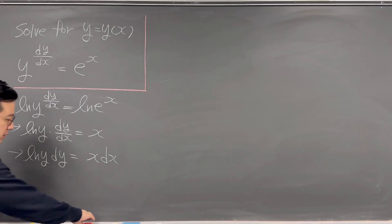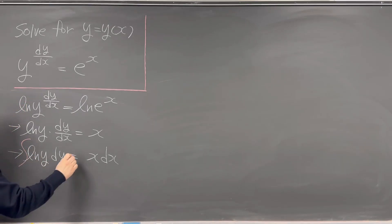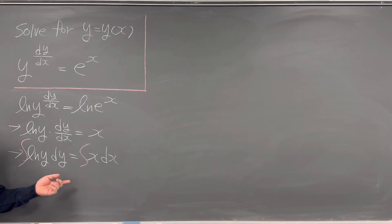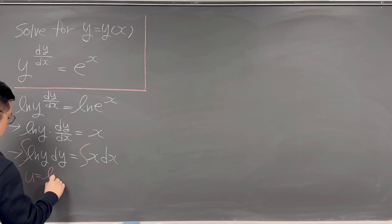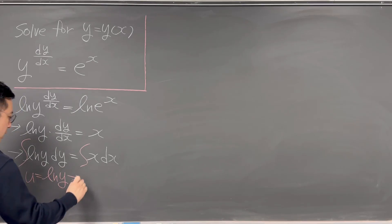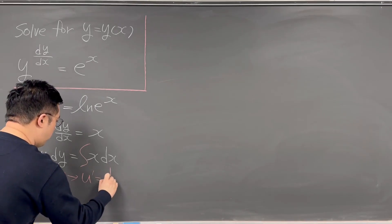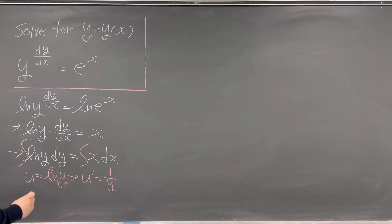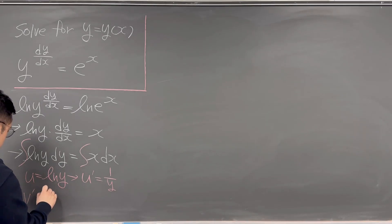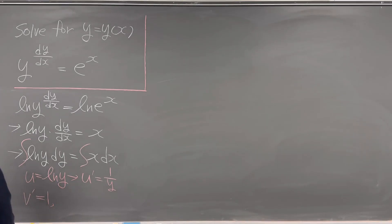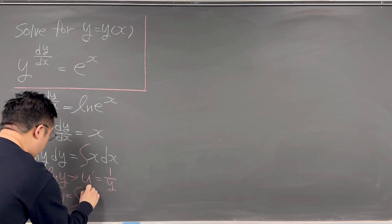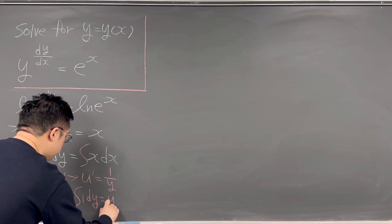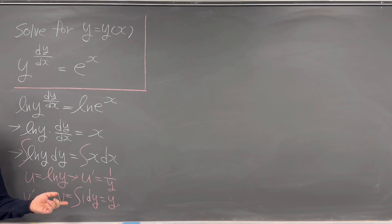We can now work on the antiderivative of both sides using integration by parts. We set u equal to ln(y), so u prime is 1/y. And v prime equals 1, so v equals the antiderivative of 1 dy, which is just y. This is the starting point for the integration by parts.